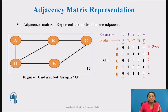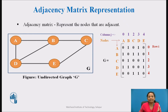In this way, for every edge between two vertices, the value is set to 1 in the respective cell of the matrix and the graph is represented using the adjacency matrix. The matrix G is the adjacency matrix representation for graph G. We have seen the adjacency matrix representation for an undirected graph. Now let us see an adjacency matrix representation for a directed graph.